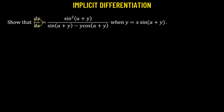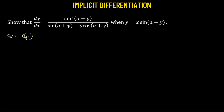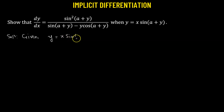We need to show that the derivative of y with respect to x is given by a particular expression, whenever y equals x times sine of (a plus y). So let's begin. Here we have our function y given in its implicit form: y = x·sin(a + y). We'll consider this to be equation number one.